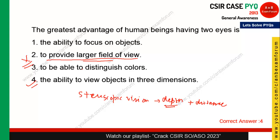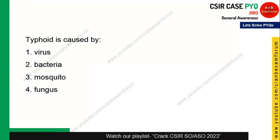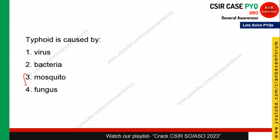The next question: typhoid is caused by what? Mosquito causes malaria, and fungus is unrelated — both are wrong. Students often confuse virus and bacteria, but in the case of typhoid the correct answer is bacteria. The name of the bacteria is Salmonella typhi. It can disturb your stomach, cause diarrhea, and fever. Option 2 — bacteria — is correct.